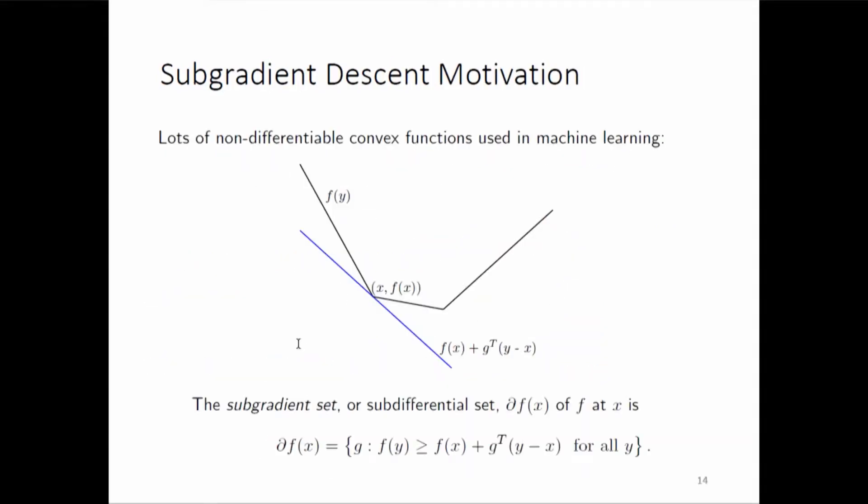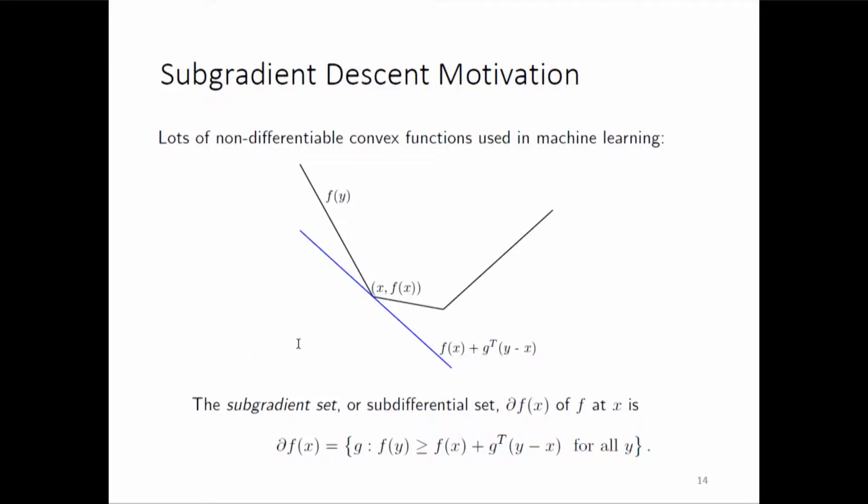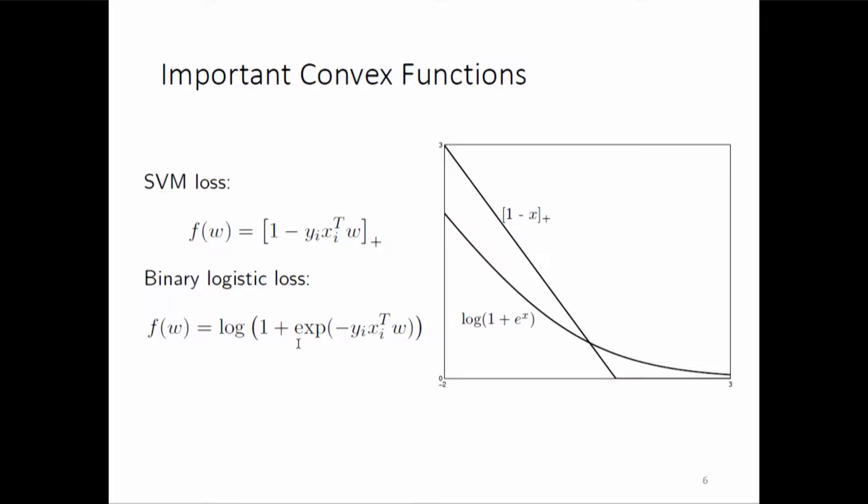Newton's method you need not understand. Has sub-gradient been covered? Sub-gradient is a sort of extension to gradient for non-differentiable functions. Hinge loss is a very good example. Can you understand why hinge loss is not differentiable? The SVM loss — the loss for binary SVM — is not differentiable because...